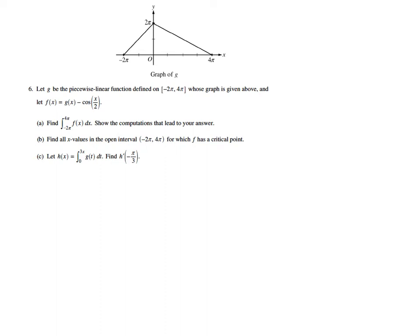In this video, we're going to talk about question number 6 from the 2011 AP Calculus AB Form B examination. So in this question, it says, let g be the piecewise defined linear function defined on the interval from negative 2π to 4π, whose graph is given above, and then let f(x) equal g(x) with that graph minus the cosine of x over 2.